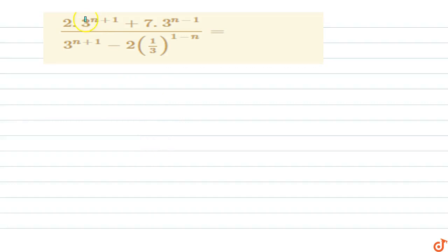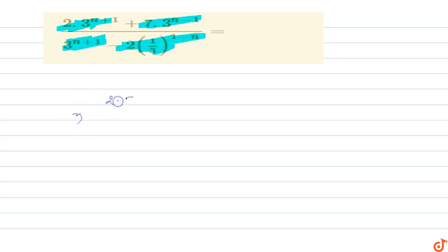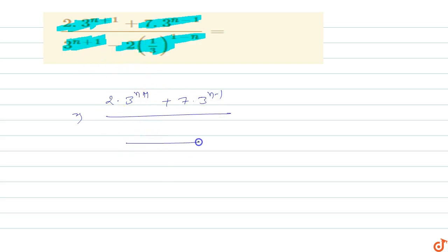In this question we have to find the value of this expression: 2 into 3 power n plus 1, plus 7 into 3 power n minus 1, upon 3 power n plus 1 minus 2 into 1 upon 3 whole power 1 minus n. So this equals 2 into 3 power n plus 1 plus 7 into 3 power n minus 1 upon 3 power 1 minus n.